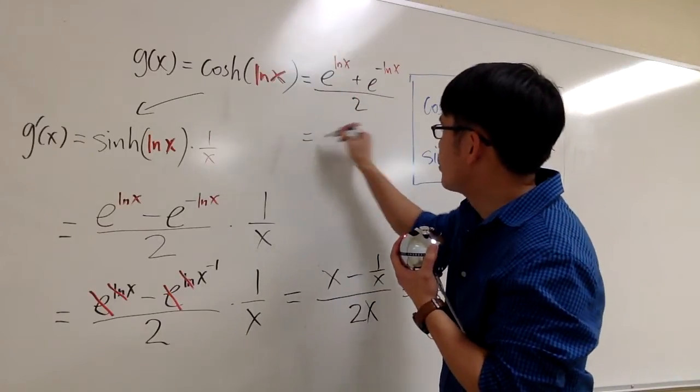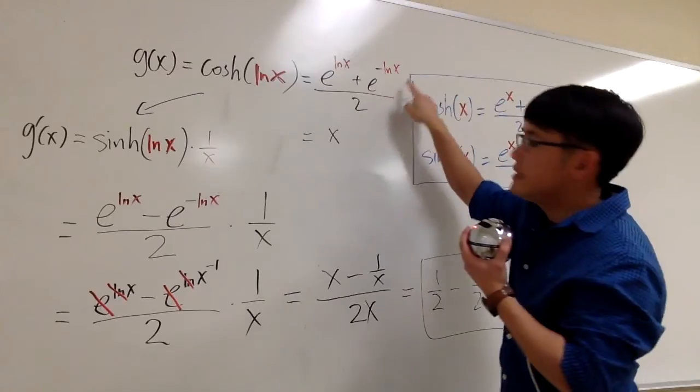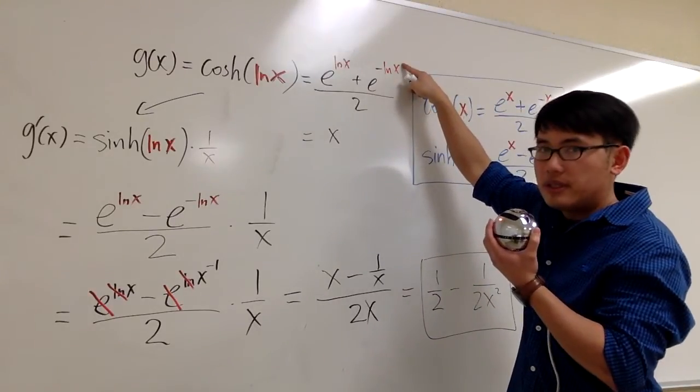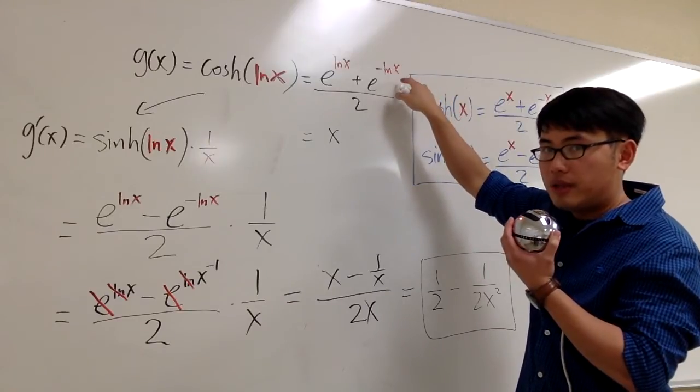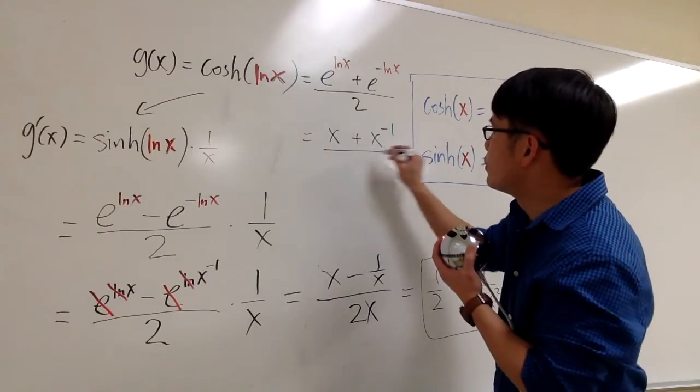And let me just do this real quick for you guys. This together is going to be x. And this together, remember, you have to bring the negative onto the exponent. And then you can cancel the e and the ln.